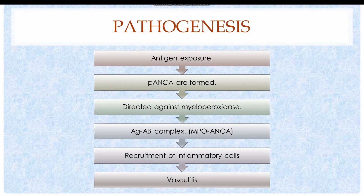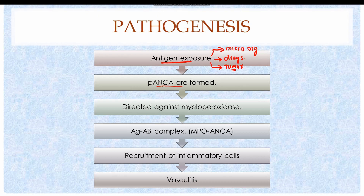Moving on towards the pathogenesis. First of all, there is an antigen exposure to the body. The antigens may be derived from certain microorganisms such as streptococci and cytomegalovirus, or they may be certain drugs such as penicillin, or the antigen could be a protein derived from a tumor. In predisposed individuals, these antigens result in the activation of antineutrophilic cytoplasmic antibodies, or P-ANCA, and these P-ANCA are autoimmune in nature.